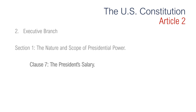Section 1, Clause 7 is regarding the president's salary. It says the president shall at stated times receive for his services a compensation which shall neither be increased nor diminished during the period for which he shall have been elected, and he shall not receive within that period any other emolument from the United States or any of them. The president maintains the same salary during each four-year term and may not receive additional cash payments from the government. Originally, the salary was set at $25,000 per year. The salary is currently $400,000 a year plus $169,000 in various expense accounts.